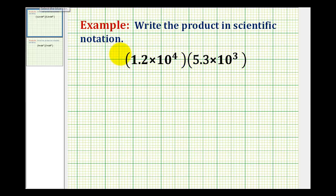So we're going to rewrite this so that the mantissas or significands are together. So we'll have 1.2 times 5.3 times, and then we'll write the powers of 10 together. So we'll have 10 to the fourth times 10 to the third. Now we'll determine the product of the mantissas or significands, and then we'll determine the product of these tens raised to powers.